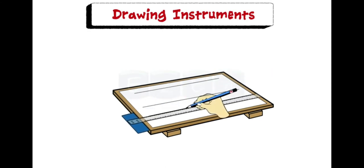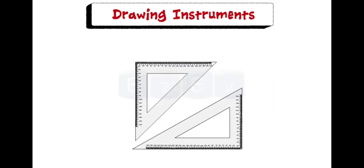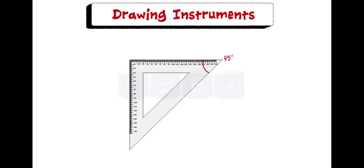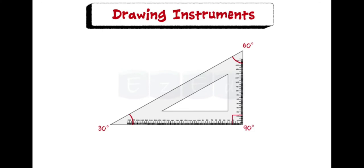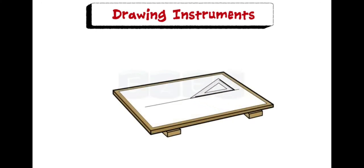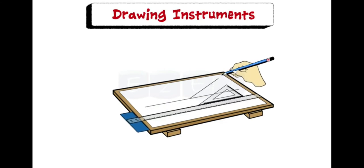Set square is triangular in shape with one of the angles as a right angle. Two forms of the set square are generally used: one having angles 45, 45, and 90 degrees, and the other is 30, 60, 90 degrees. Set square in combination with T-square is used to draw lines at an angle.